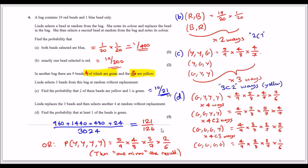A quicker method: instead of calculating all 15 cases, use the complement. The only excluded case is 4 yellows (zero greens). Calculate P(all yellow) = (5/9)×(4/8)×(3/7)×(2/6), then subtract from 1 to get P(at least one green) = 1 - P(all yellow) = 121/126. This is much more efficient.